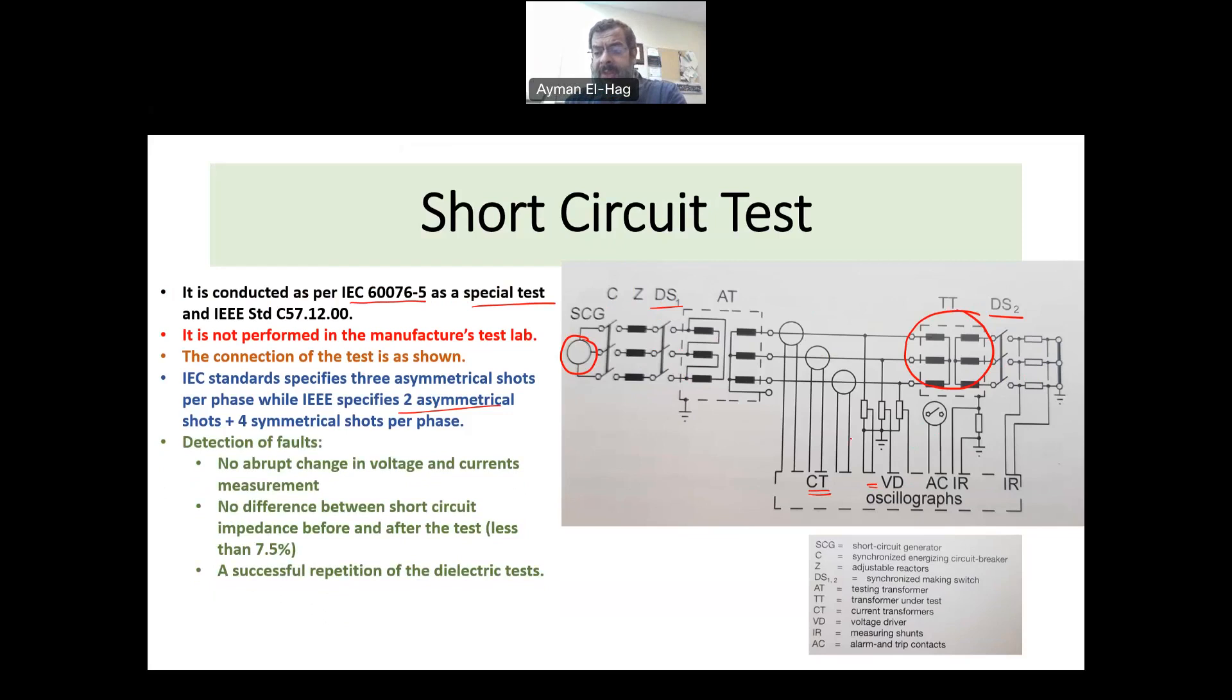During the test, you will be measuring the voltage and the current. So if there is any abrupt change in the voltages or currents, like a collapse of the voltage or the current, sudden collapse, then you know that the transformer has failed the test.